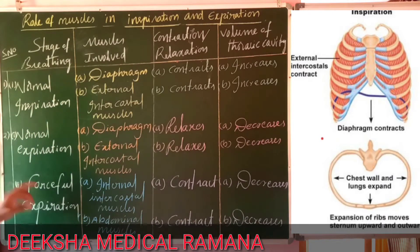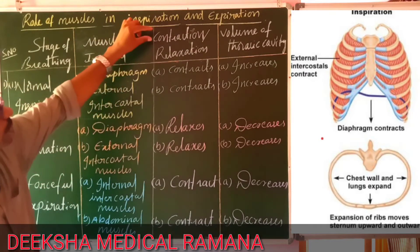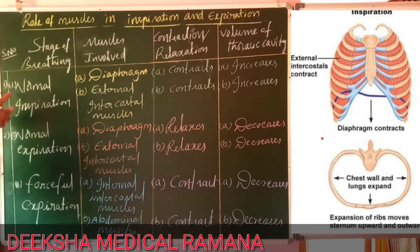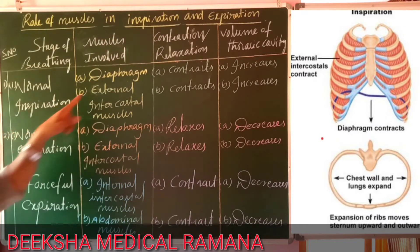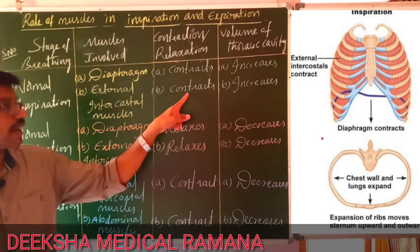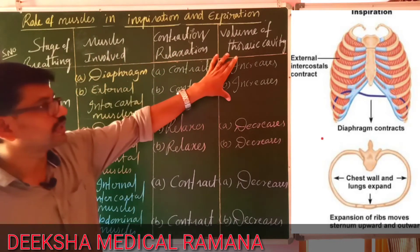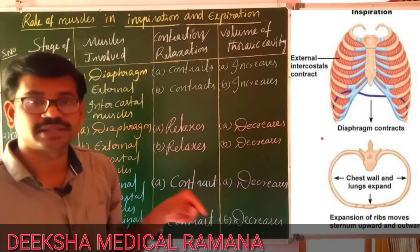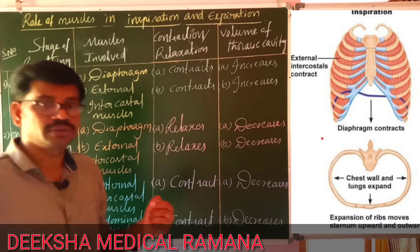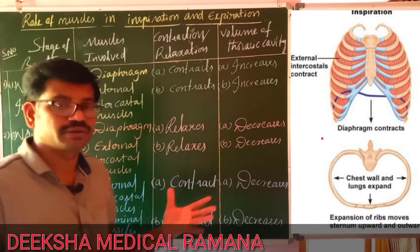During forceful expiration, internal intercostal muscles and abdominal muscles play a very important role. Now, what happens during normal inspiration by the diaphragm — contraction and relaxation. During normal inspiration, the diaphragm contracts and the external intercostal muscles contract. By the contraction of the diaphragm and external intercostal muscles, the volume of the thoracic cavity increases, which influences an increase in the volume of the pulmonary cavity. This helps to decrease the pressure within the lungs — intrapulmonary pressure — compared with the atmosphere.